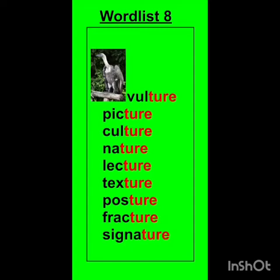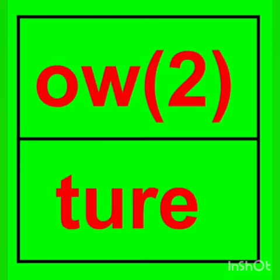Shall we read all the words once again? Vulture. Picture. Culture. Nature. Lecture. Texture. Posture. Fracture. Signature. OK, children. Today we have learnt two word lists. They are OW and TURE. OK children, thank you. Bye bye.